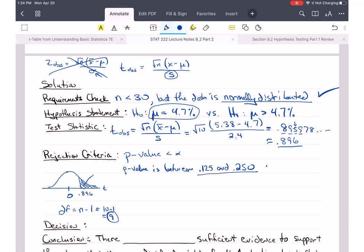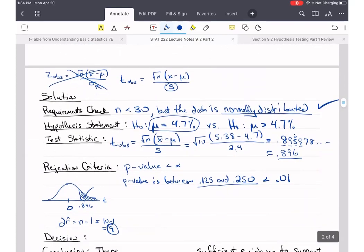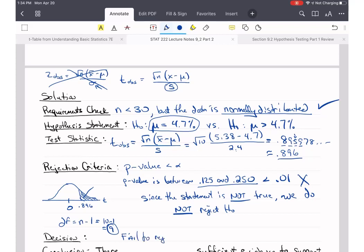Is this less than 0.01, which is what our alpha is in this case? Remember, they gave us alpha, so use alpha equals 0.01. No, neither one of these numbers is less than this. This is not true. Since the statement is not true, we do not reject H-naught. So our decision is still going to be fail to reject H-naught.